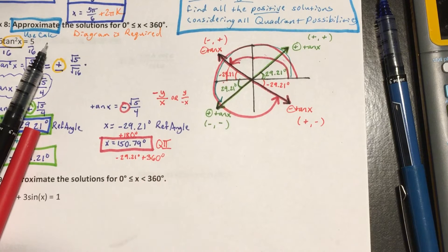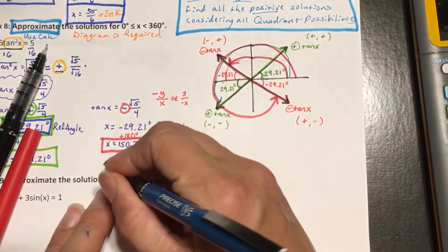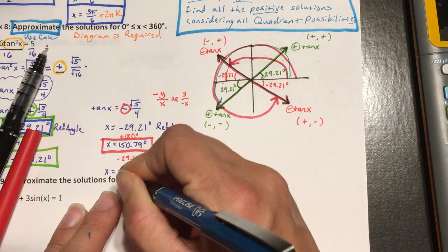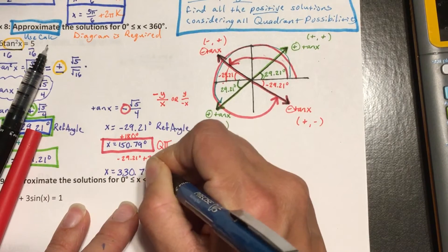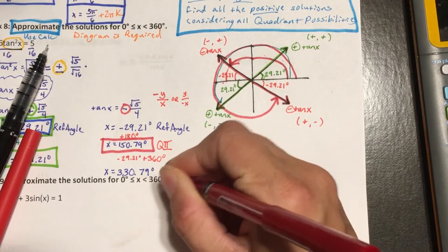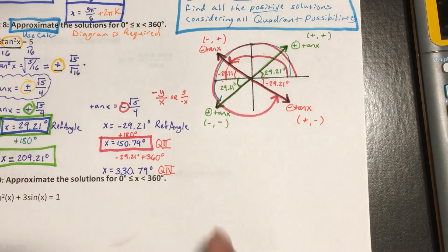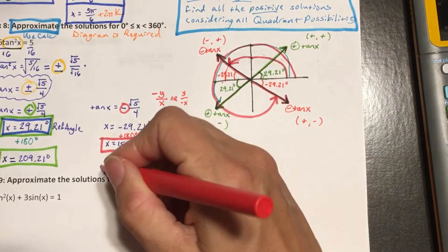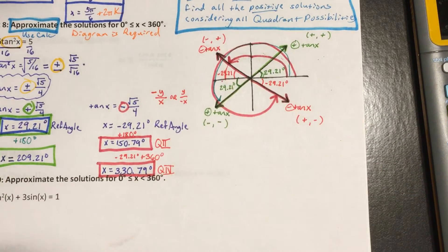So if I take 360 minus 29.21, we get x equals 330.79 degrees. So that is my quadrant 4 angle, or the angle that gives me a negative tangent.